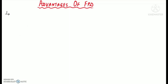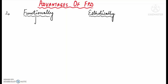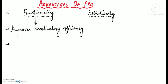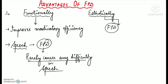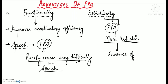Fixed partial dentures are an effective solution for the replacement of missing teeth both functionally and aesthetically. FPD allows the patient to chew food normally, improving masticatory efficiency. FPD also enables the patient to speak without inhibition and rarely causes any difficulty in speech, because the size of the pontic is almost similar to the tooth being replaced. FPD is more aesthetic compared to RPD due to the absence of clasps and acrylic denture base.